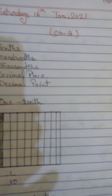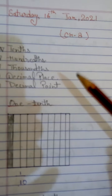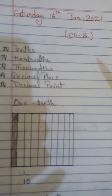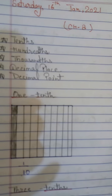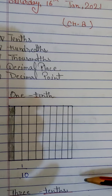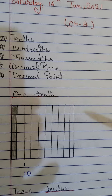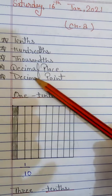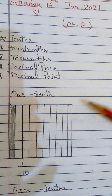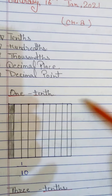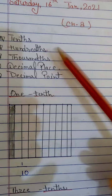Let's review the previous work from Saturday, January 16th, 2021. You have already written this work. We covered tens, hundreds, thousands, decimal place, and the decimal point. We will now revisit these points including the tens, hundreds, and thousands places.